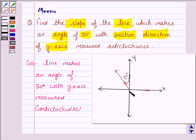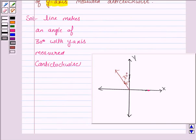To find the slope of this line, we need to find the angle which it makes with the positive direction of x-axis measured anticlockwise.